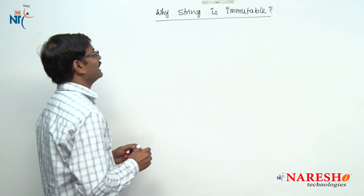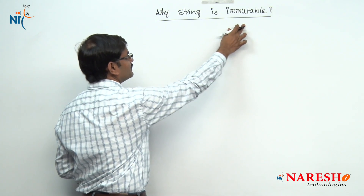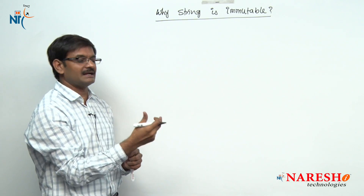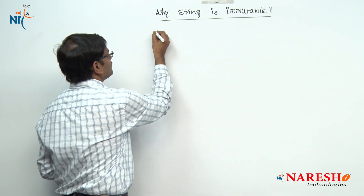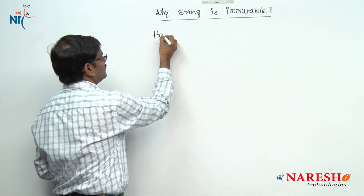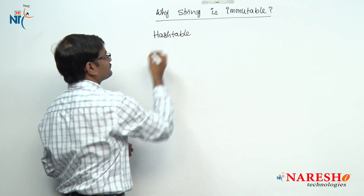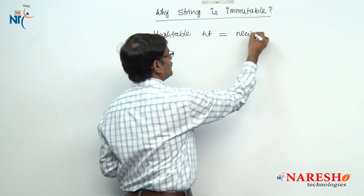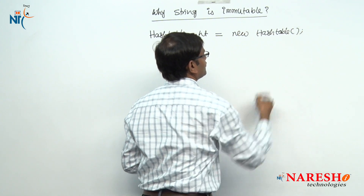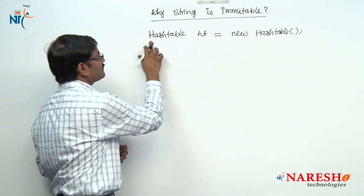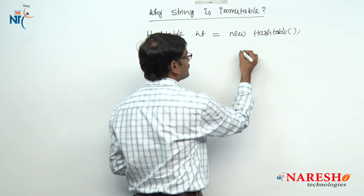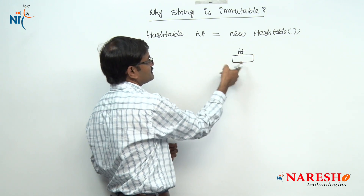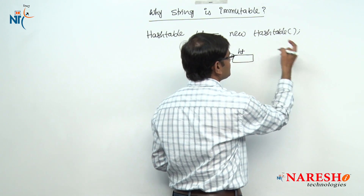Let me understand this with a small example of why string is immutable — to store a string object as a key inside a Map. I am taking one of the collection objects called Hashtable: Hashtable ht = new Hashtable(). Because of this statement, inside JVM software, the ht variable is created and a Hashtable object is created.